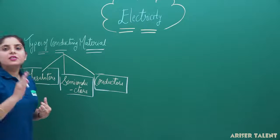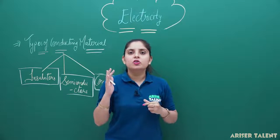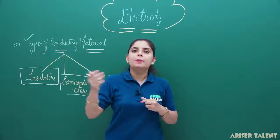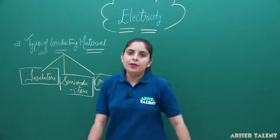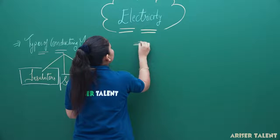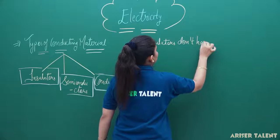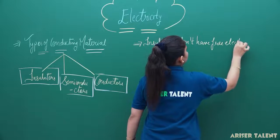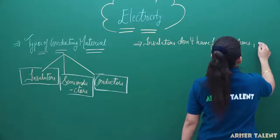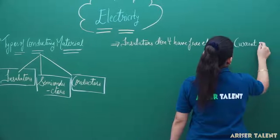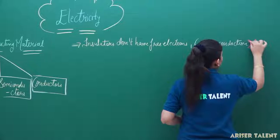What are insulators? Insulators are those substances which do not have any free electrons. If they do not have any free electrons, they have no part in the conduction of electricity. For example, if you try to pass electricity through paper or plastic, it is not possible because paper and plastic are insulators. Insulators do not have free electrons, so conduction of current will not be possible in the case of insulators.